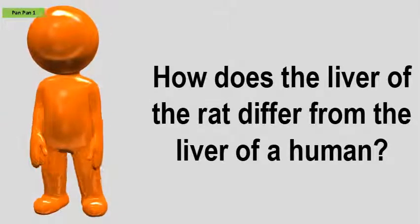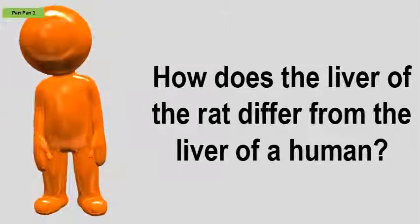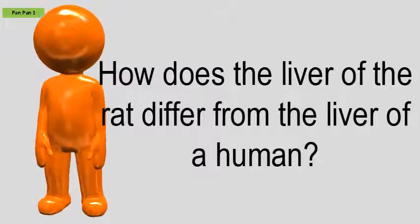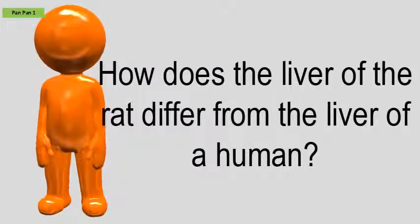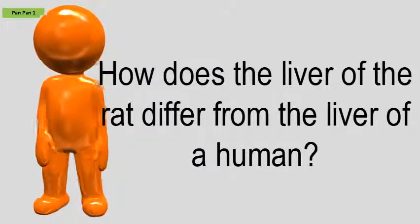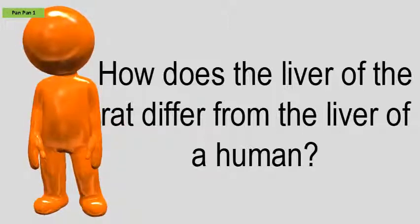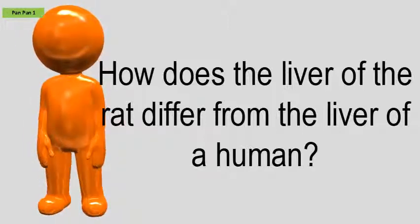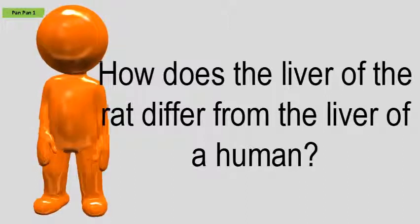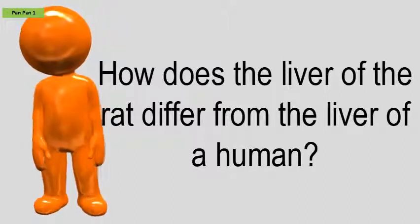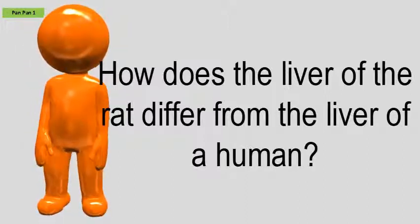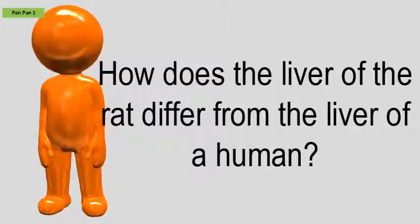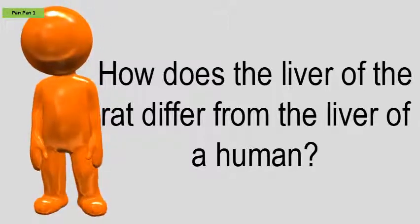How does the liver of the rat differ from the liver of a human? In humans, the bile produced is stored in the gallbladder, where it can be injected into the small intestine at any time. Rats do not have a gallbladder, so the bile goes straight from the liver into the small intestine. Rat livers have four lobes while human livers only have two.